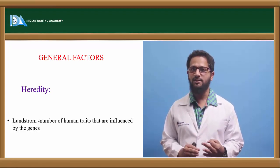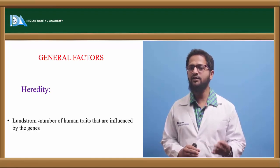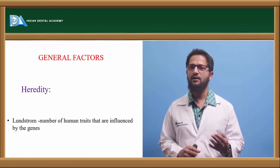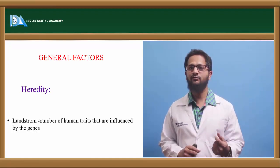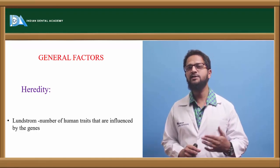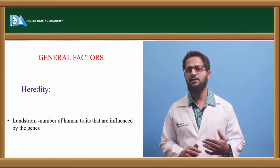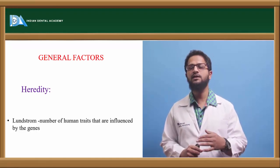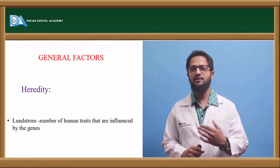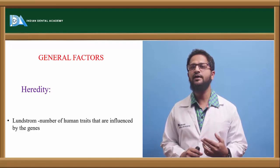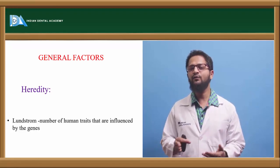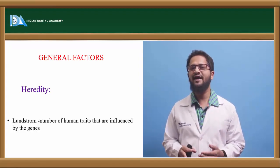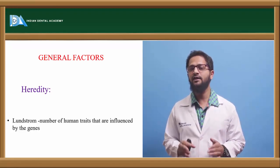Lundstrom said that there are a number of human traits which are dependent upon genes. These traits include similarities in tooth size, tooth shape, arch dimensions, arch length, arch width, labial frenum attachments, inter-arch variations in sagittal, transverse, and vertical planes, crowding, spacing, and rotations. There are a number of traits which usually have genetic influence.